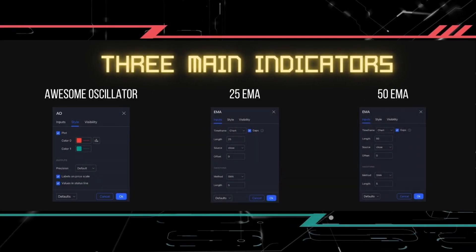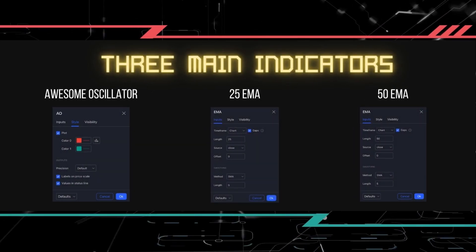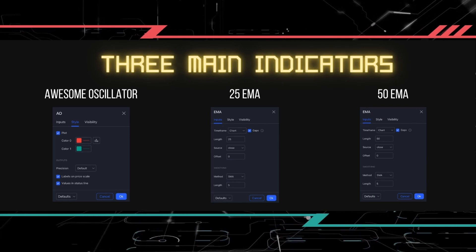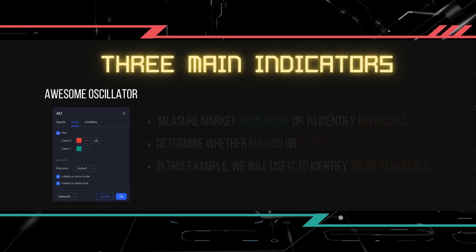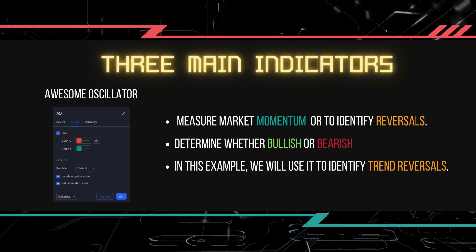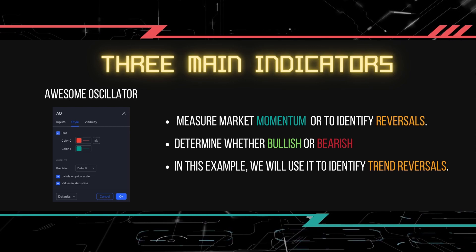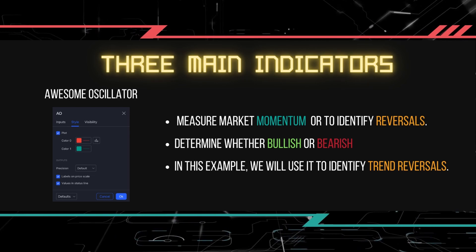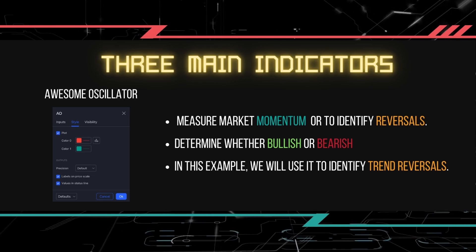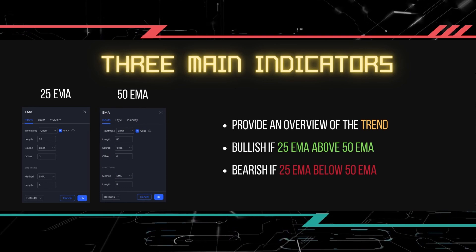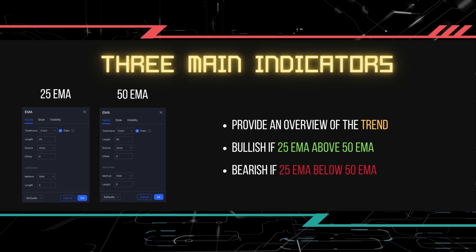The strategy uses three indicators: the awesome oscillator, the 25 exponential moving average, and the 50 exponential moving average. The awesome oscillator is used to measure market momentum and to affirm trends or to anticipate possible reversals. It is also used to determine whether bullish or bearish forces dominate the market. In this example, we will use it to identify trend reversals. The other two indicators, the 25 and 50 exponential moving averages, are common moving averages used to provide an overview of the market trend.